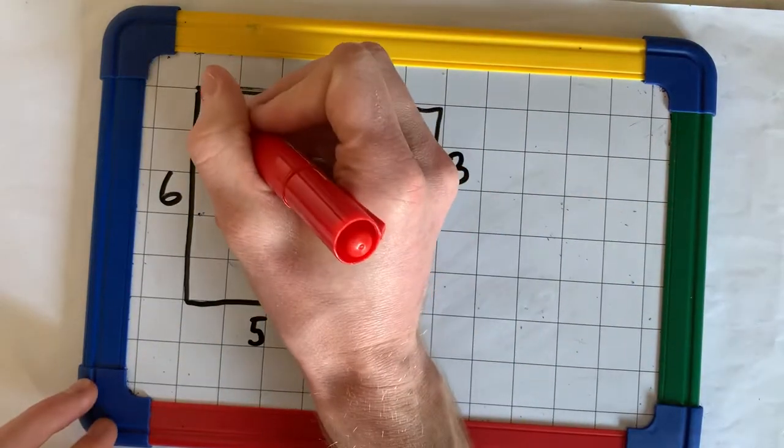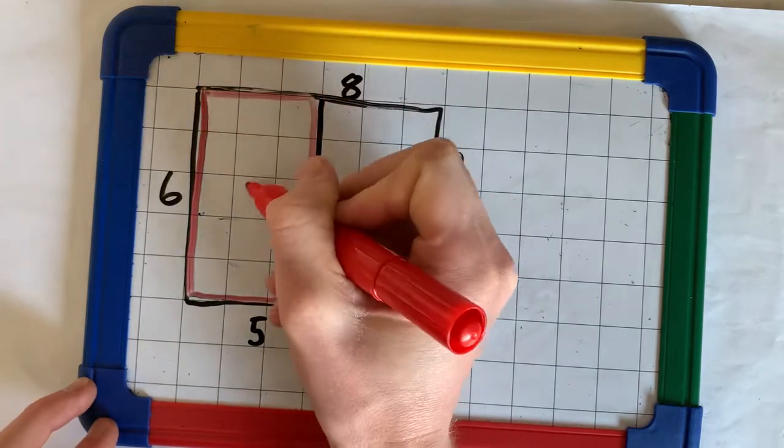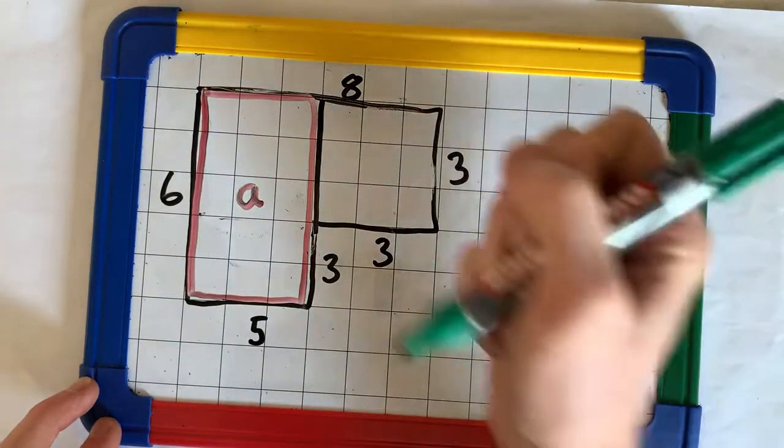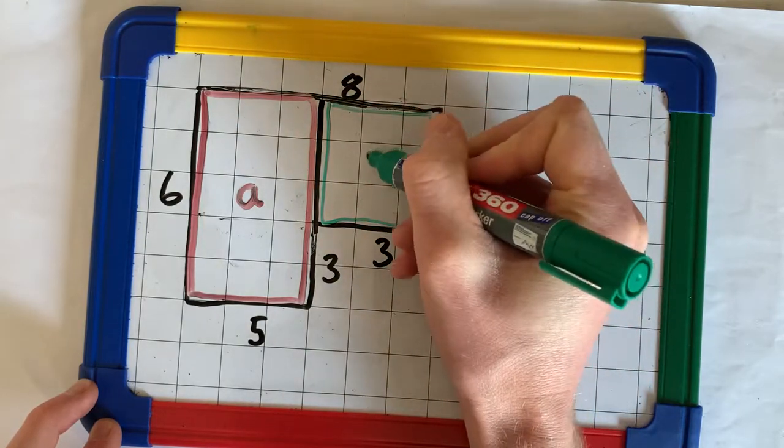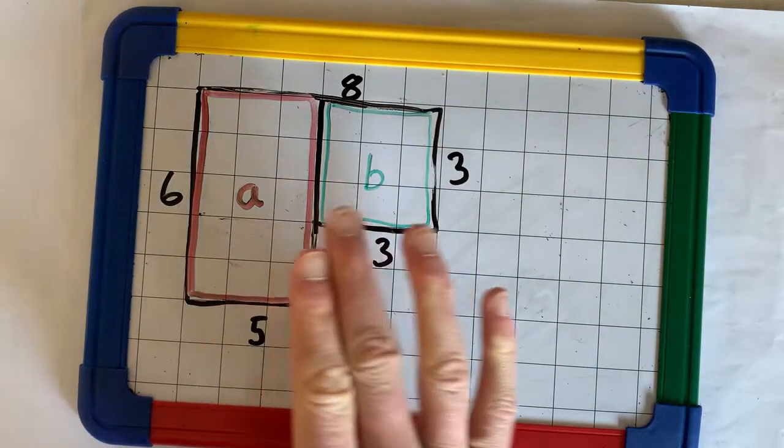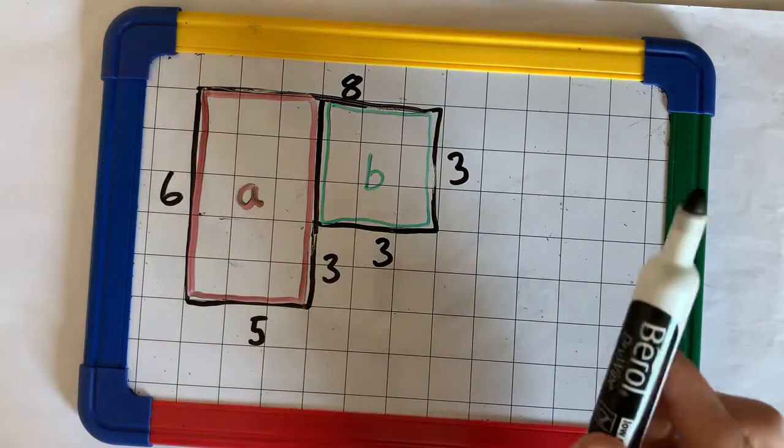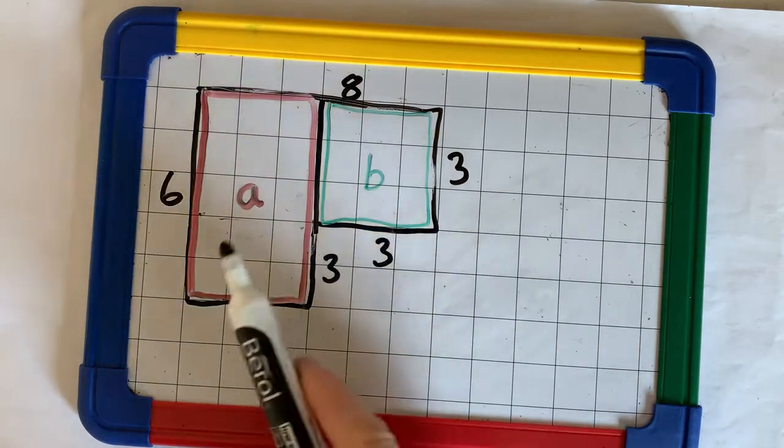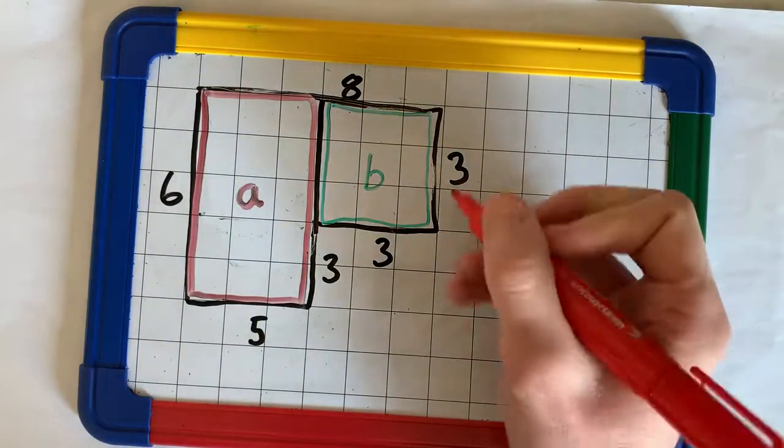Now, I have a red rectangle, and I'm going to call that A. And I have a green square, and that's B. Now, I can find the area of A and the area of B, and add them together, and that will give us the area of the whole compound shape.